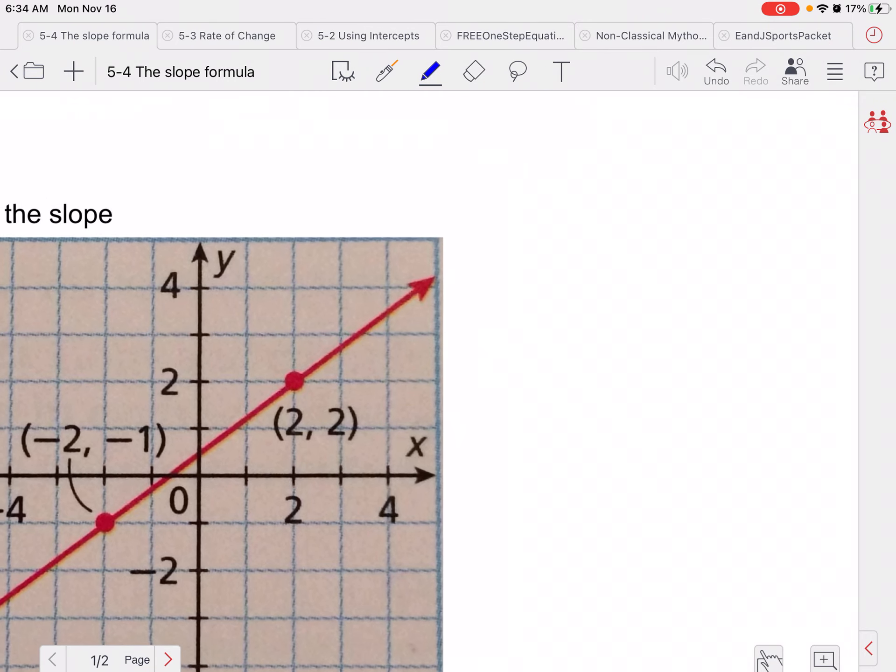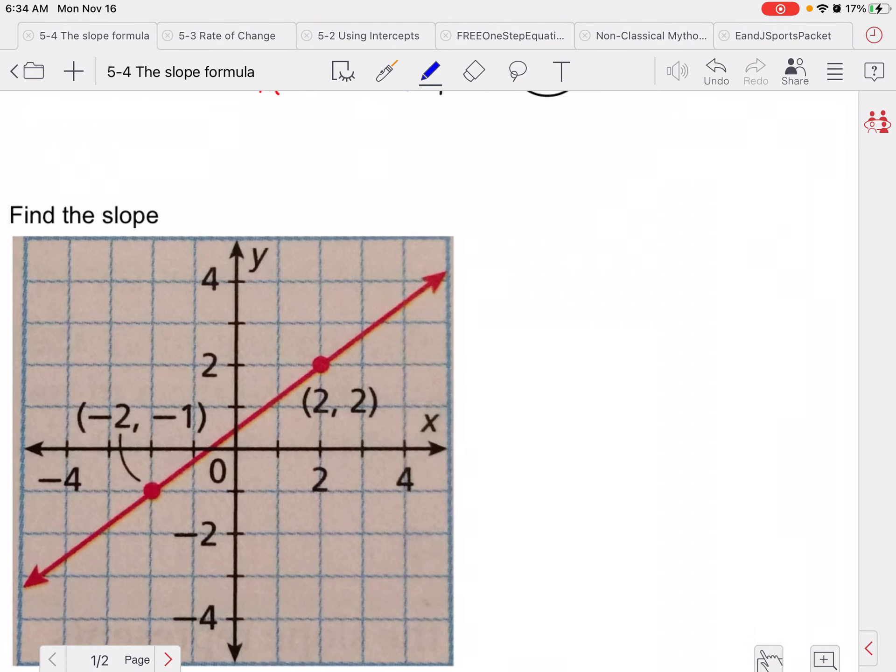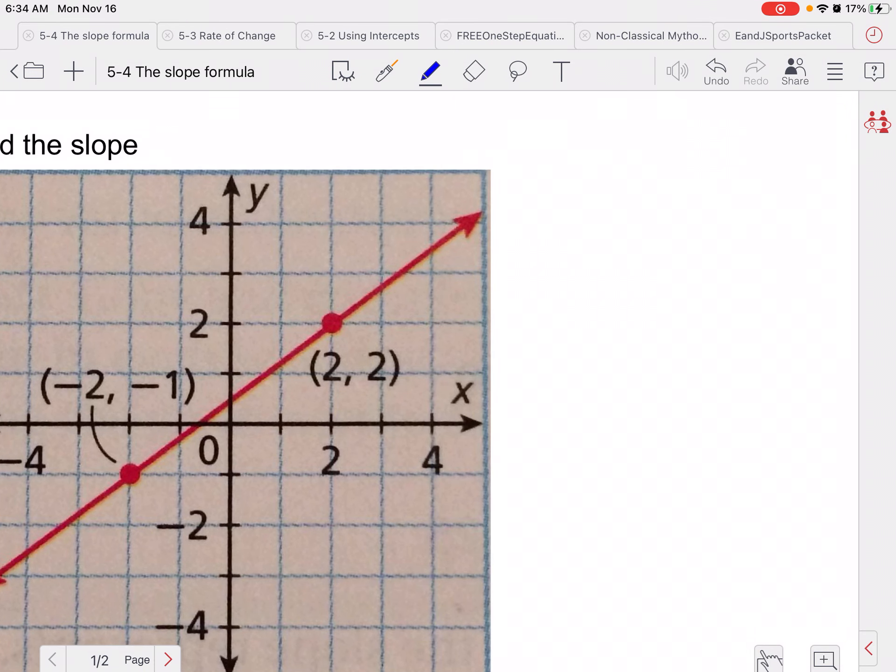Again, they gave us two points here. Negative 2, negative 1, I apologize, and 2, 2. So I would have x1, y1, x2, y2. Now it doesn't matter which one is which, as long as the x1 and y1 go together, and the x2 and y2 go together. So I can't have like y2 here all of a sudden.